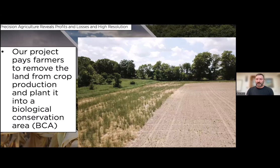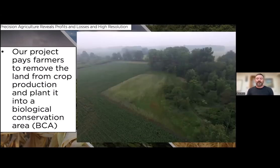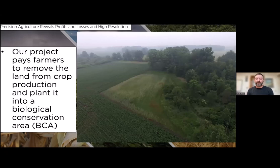Our project is paying farmers about $200 an acre to have that ground not farmed. We plant a biological conservation area—what we call native spaces—with pollinators, different forbs, and native grasses to Michigan. They go around those areas that the data reveals are losing money and take them out of production. In this picture, a farmer who had a corner always showing up as red was given money to put these seeds down. This was applied in the fall, and you can see the grasses growing up in that spot.